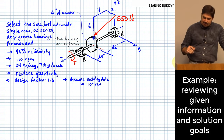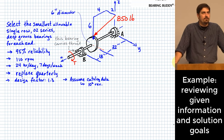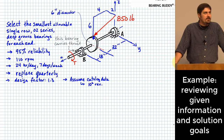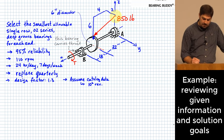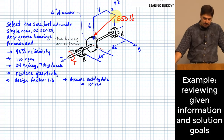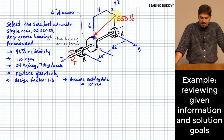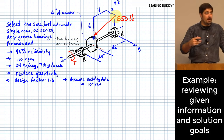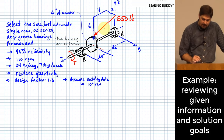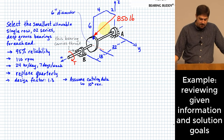Let's get into the actual problem. We have a shaft with a six-inch diameter wheel on it, with a consistent 850-pound load applied in a particular direction given by the slopes: for every six inches of rise in Z, we have four inches of run along X and two inches of run along Y. Because of that force direction, it will create not only radial loads in the two bearings but also a thrust load. We're identifying bearing B as the one that deals with that thrust load.